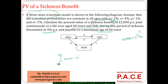I am discounting it to the present value by computing the integral of e to the power of minus delta T, multiplied by the probability of being in the sickness state itself. This expression gives the present value of the sickness benefit.